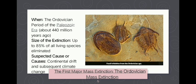The first mass extinction is the Ordovician mass extinction, which occurred during the Paleozoic era about 440 million years ago. Up to 85% of all living species were eliminated. The suspected causes are continental drift and subsequent climate change. Sea levels lowered and many species could not adapt fast enough. It happened in two waves: an ice age, and then a sudden end to the ice age.